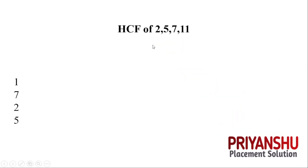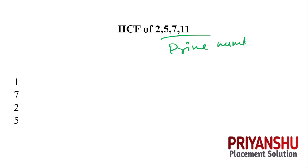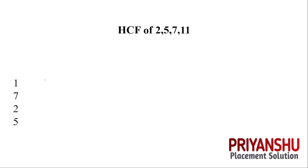Find the HCF of 2, 5, and 7. Since all these are prime numbers, no need to find the HCF by calculation — the HCF of all prime numbers is simply 1.